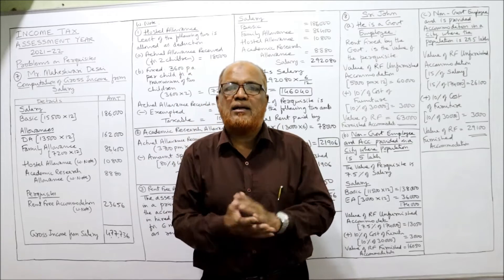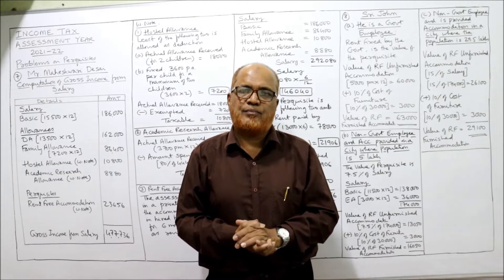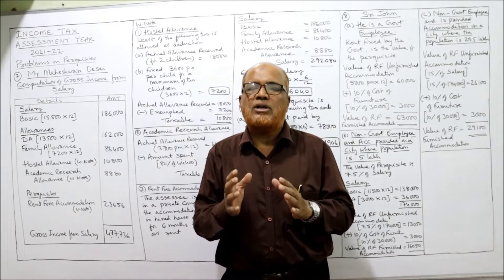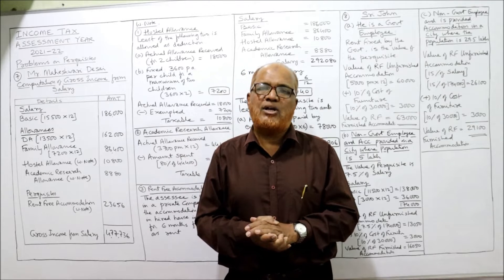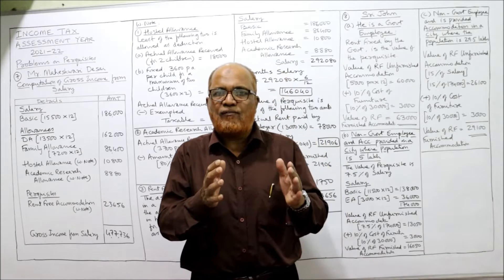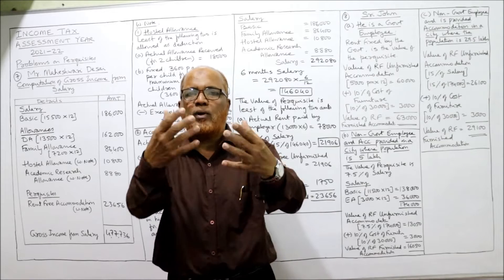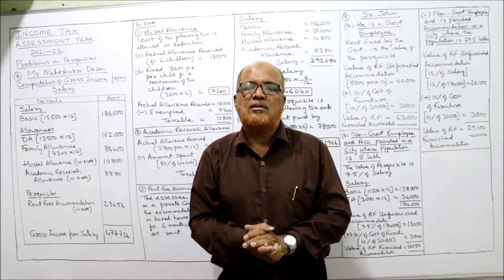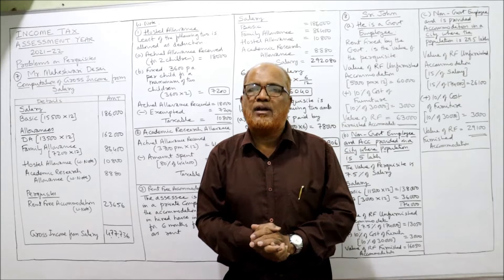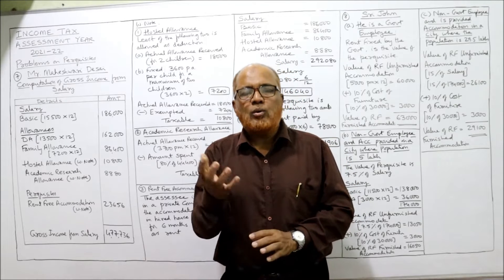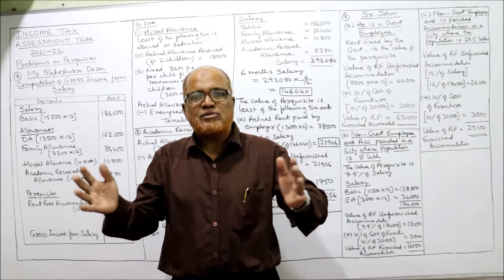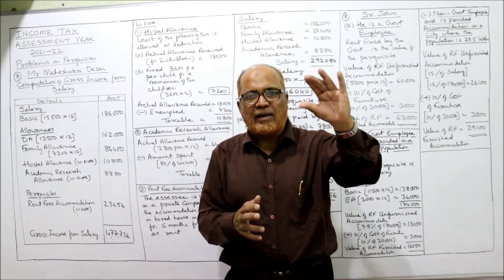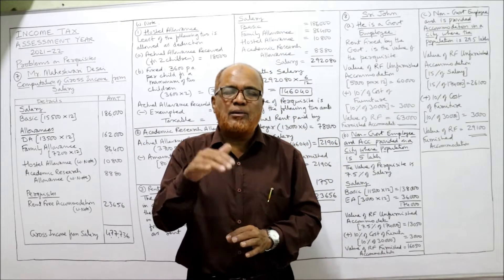If the benefit is given in kind, the Income Tax Act has given provisions on how to calculate the value of the benefit. The most important perquisite is rent-free accommodation — the house or flat provided by the employer to the employee for residential purposes without charging any rent. There are two types: unfurnished and furnished.